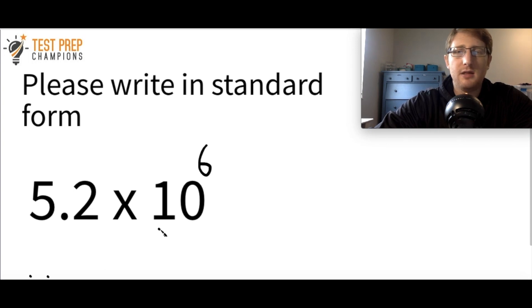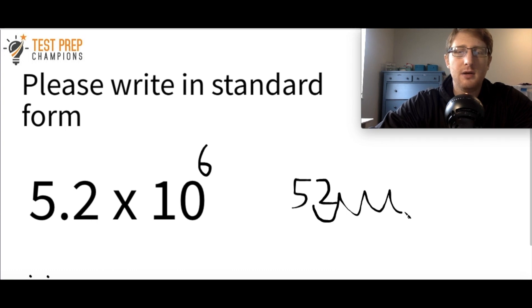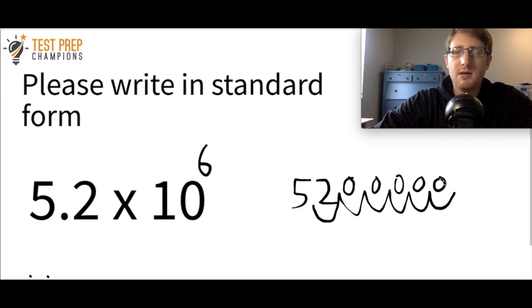One way to think about this is to just work backwards from what we were doing in the previous questions. You could start by writing 5.2, knowing the decimal starts between the 5 and the 2, and think about moving it six places to the right — then add the zeros in: 1, 2, 3, 4, 5, 6. That's one way to get the right answer.